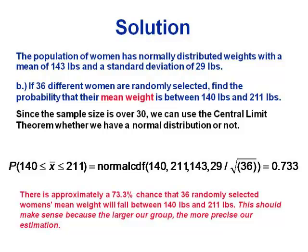That comes out to 0.733 — a 73.3% chance that 36 randomly chosen women would have an average weight in that range. This makes sense: the larger the group, the more precise the estimation. With one woman, there was a 53.2% chance — nearly a 50% chance she falls outside the interval. But when averaging a group together, it's much harder to deviate from the overall mean, so the group average is more likely to land near the population mean.